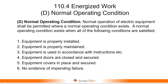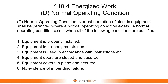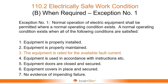If you're just going to operate the equipment, let's have a checklist. If you can check all six boxes, then go ahead and operate the equipment — that is what it is designed for. Now there are some changes to it. This is part of 110.2 electrically safe work condition B, when required, exception number one. The new addition was that the equipment is rated for the available fault current.